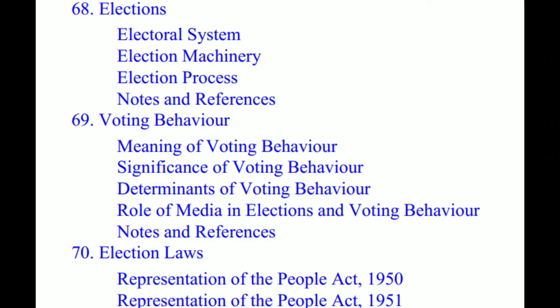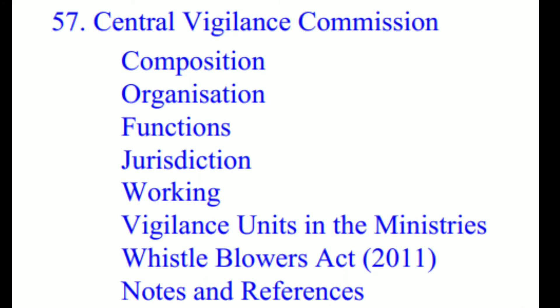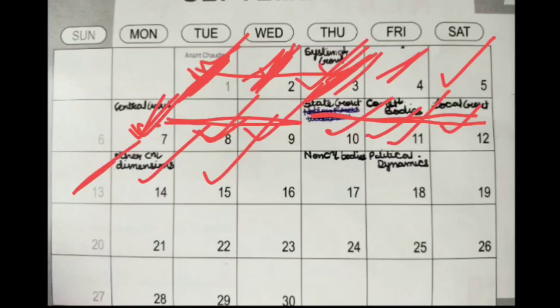On day sixteen, you do chapter 68 — Elections — voting behavior, election laws, and chapter 57 — Central Vigilance Commission — which was still pending. With this, you are just left with two chapters to complete the non-constitutional bodies section.